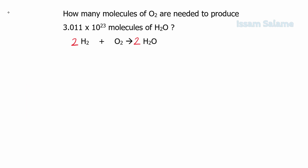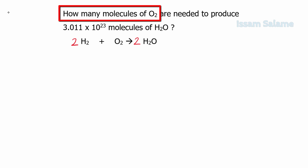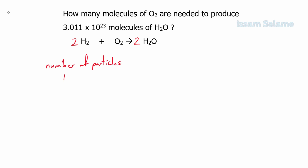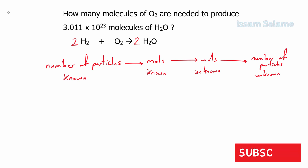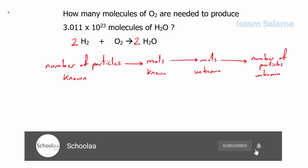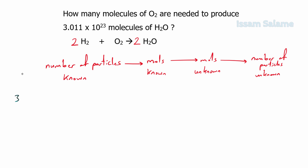In this problem the known quantity is a number of particles and the unknown quantity is also a number of particles. In such questions, and in all stoichiometry number-of-particles problems, we use the following procedure: we convert the number of particles of the known quantity to moles of the known quantity using Avogadro's number, then convert moles of known to moles of unknown using the mole ratio, then moles of unknown to number of particles using Avogadro's number.